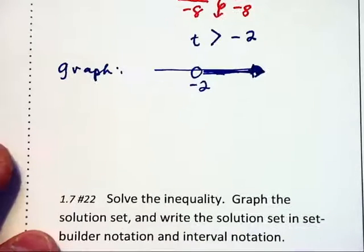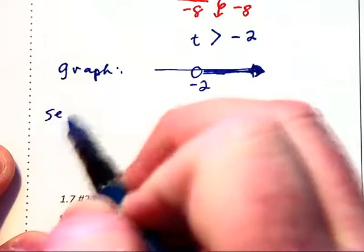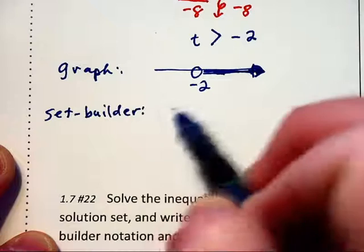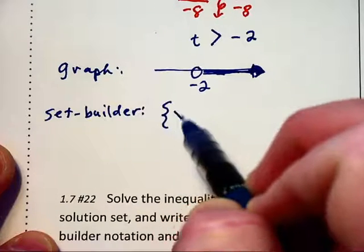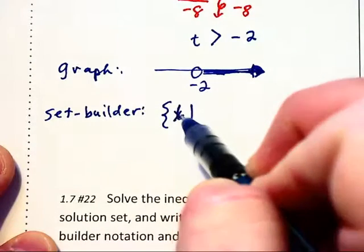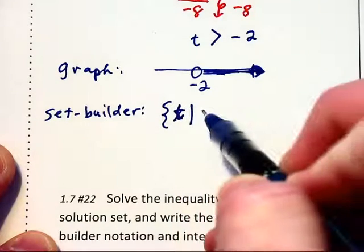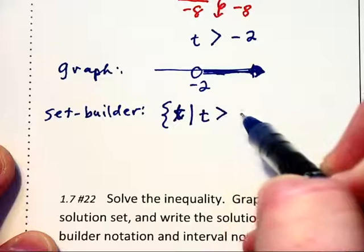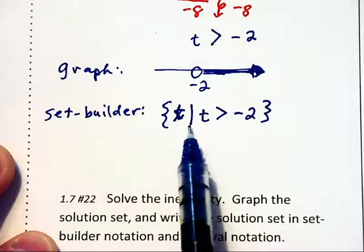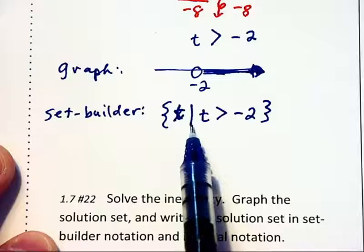In set builder notation, we have the set of all t's such that t is greater than negative 2. Remember that the bar represents the words such that.